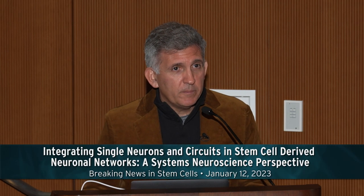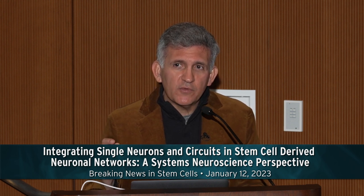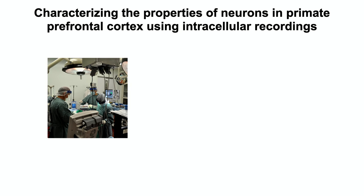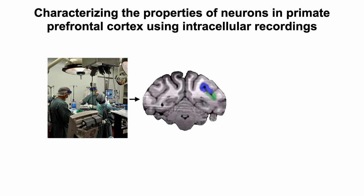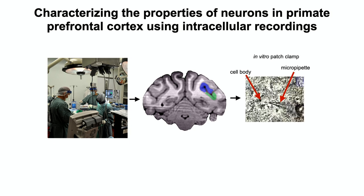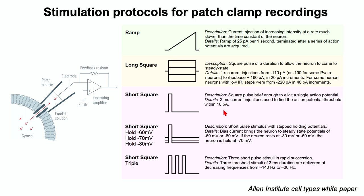With patch clamp you can remove parts of the cortex during surgical interventions — in patients or animal models — keep that tissue alive, and do patch clamp recordings in it. This allows you to expand from animal models to humans, studying the response properties of single neurons. You can stimulate with different pulse types: a ramp current, long square pulses (one of the most used), or short squares. Injecting negative currents hyperpolarizes the cell; positive currents depolarize it and elicit action potentials.